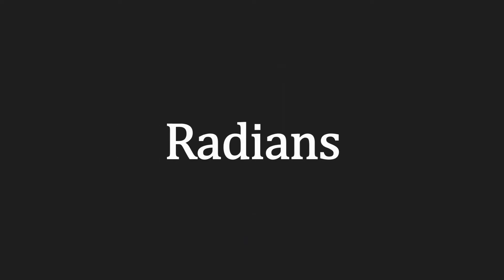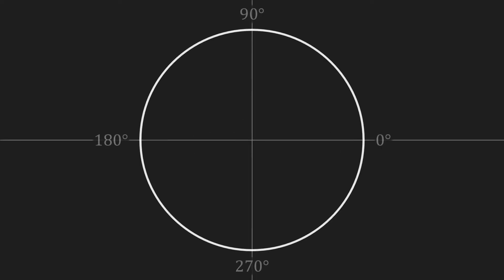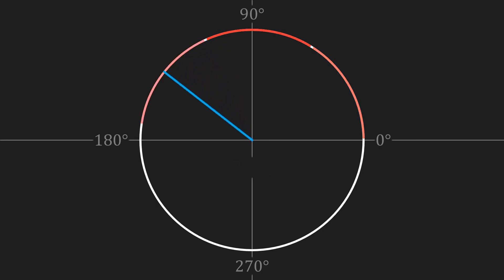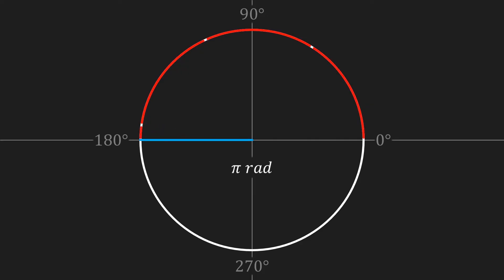Talking about angles, there is an alternative way in which we can represent them, and that is using radians. To understand what a radian is, I'm going to take a circle — the red line I draw here is the radius of that circle. If we now move that line next to the circle and wrap it on the circumference without modifying its original length, the angle formed by that arc is what we call 1 radian. This is 2 radians, this is 3 radians, and a semi-circle or 180 degrees is equal to pi radians. So a full circle or 360 degrees is 2 pi radians — in other words, 2 pi is the amount of times the radius of a circle fits in its circumference.